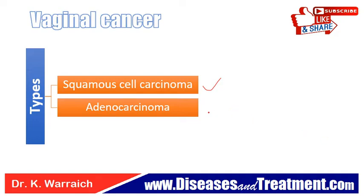The second type is adenocarcinoma — cancer that begins in the glandular cells. The glandular cells in the lining of the vagina make and release fluids such as mucus. Adenocarcinoma is more likely than squamous cell carcinoma to spread to the lungs and lymph nodes, and it is found most often in women aged 30 or younger.